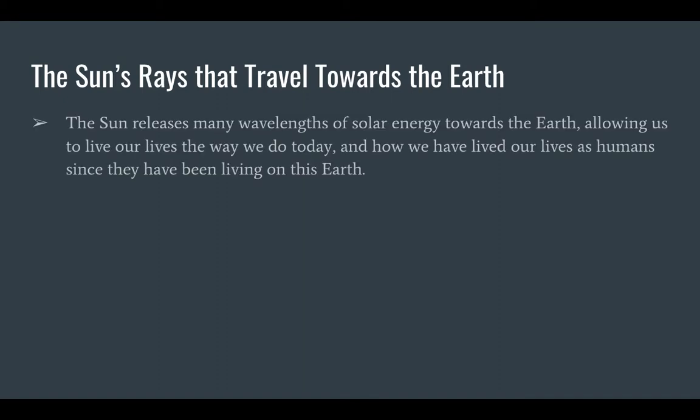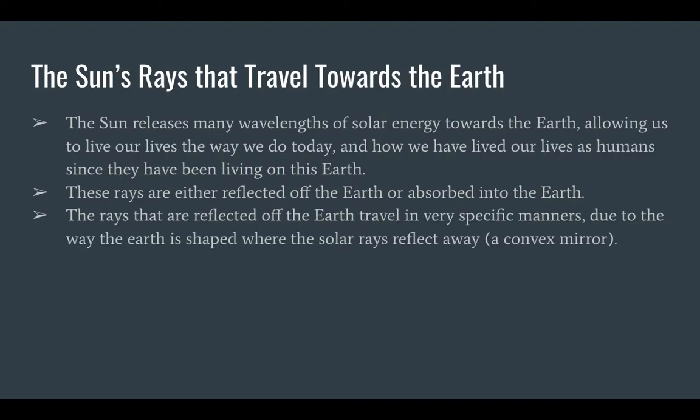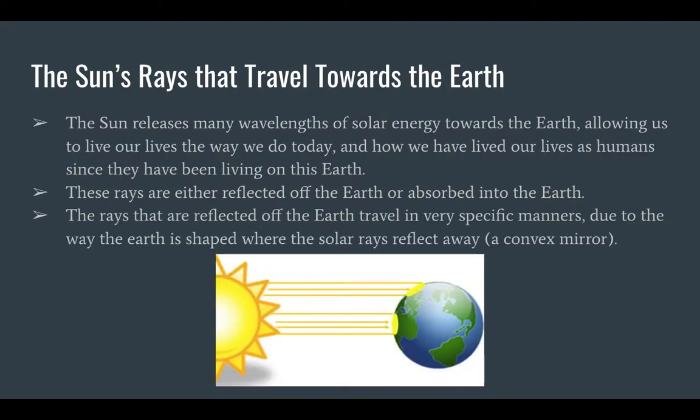The sun releases many wavelengths of solar energy towards the earth, allowing us to live our lives the way we do today, and how we have lived our lives as humans since we've been living on this earth. These rays are either reflected off the earth or absorbed into the earth. The rays that are reflected off the earth travel in very specific manners due to the way the earth is shaped, or if the solar rays reflect away, also known as a convex mirror.